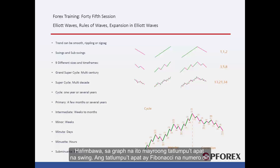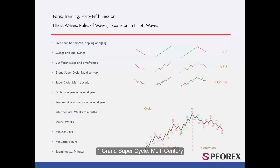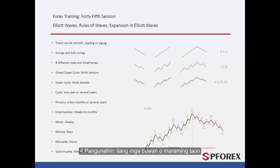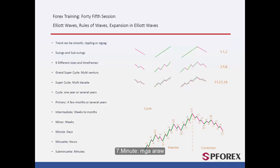For instance, in this graph there are 34 swings — 34 is a Fibonacci number. Swings can be classified into 9 categories on the basis of their size and timeframe: Grand Supercycle (multi-century), Supercycle (multi-decade), Cycle (one year or several years), Primary (a few months or several years), Intermediate (weeks to months), Minor (weeks), Minute (days), Minuette (hours), and Subminuette (minutes).